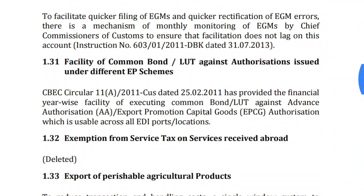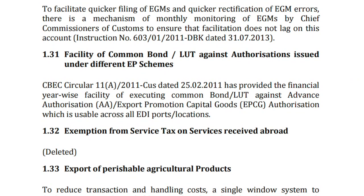Facility of the Common Bond and Letter of Undertaking (LUT) against authorizations issued under different export promotion schemes: the government provides the facility of a common bond and LUT. A bond is used when your shipment is imported under customs bond. If you are taking advantage of duty-free imports under EPCG, then you need to give a Letter of Undertaking stating that you will pay the duty and fulfill the export obligations, since the government is providing the duty-free facility and takes an undertaking against this.